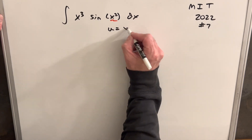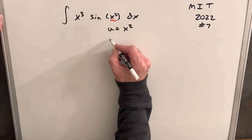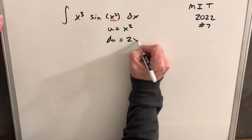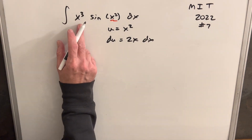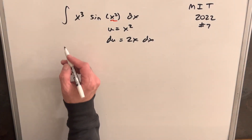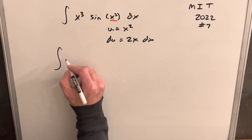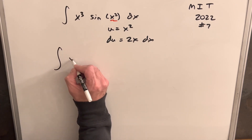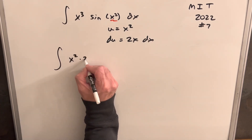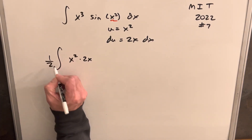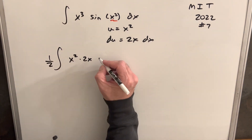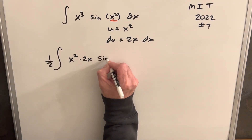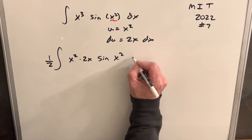I'm going to call that our u, so u equals x squared. Then du is going to be 2x dx. You'll notice we don't really have a 2x, but we can create that. So let's rewrite this — instead of writing x cubed, we're going to write x squared times 2x, and then take a half out front so that half times 2 is just 1, and we're not changing the expression. Then we'll have our sine x squared dx.